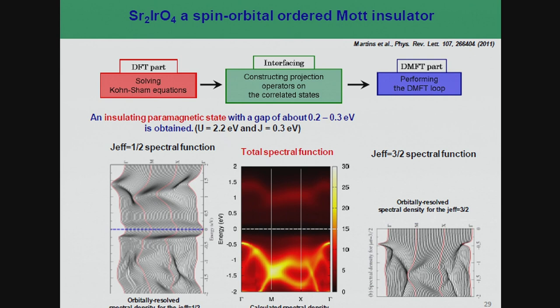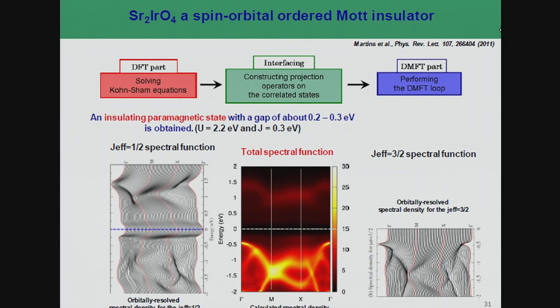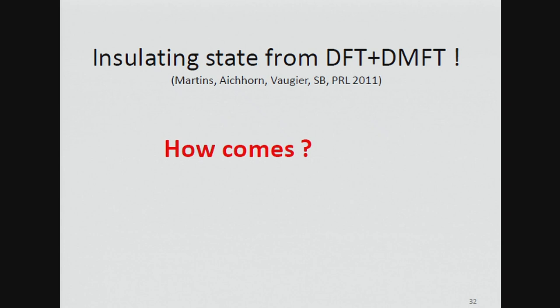Let's look at the spectral function. This is the total spectral function and these are the J_eff = 1/2 and 3/2 resolved states. For the 3/2 orbital we don't need to plot the empty part because it's filled. The J_eff = 1/2 is half-filled, and in the total spectral function you also see the gap opening. So we get the insulating state in the paramagnetic phase. You can think of the spectral function roughly as the quantity measured in photoemission or inverse photoemission — where do I take out or add an electron?